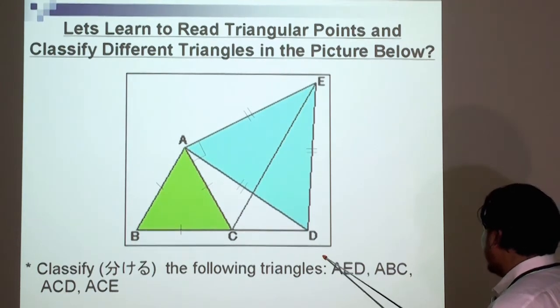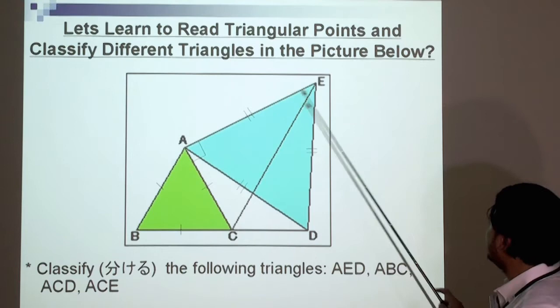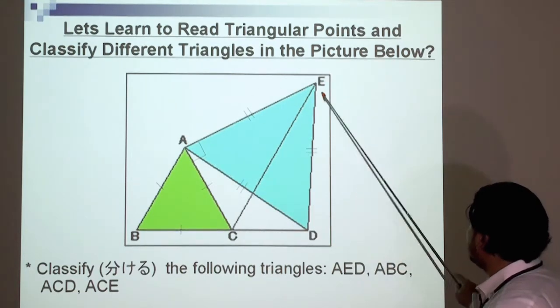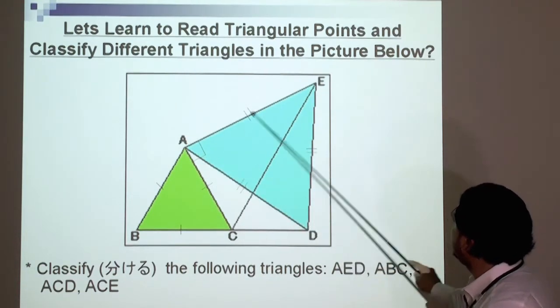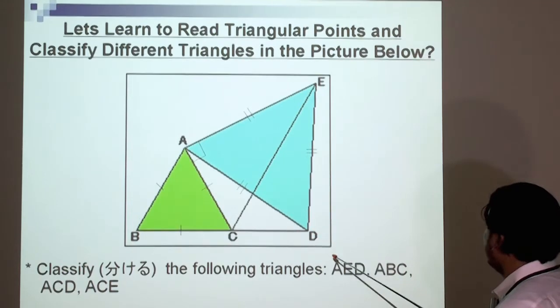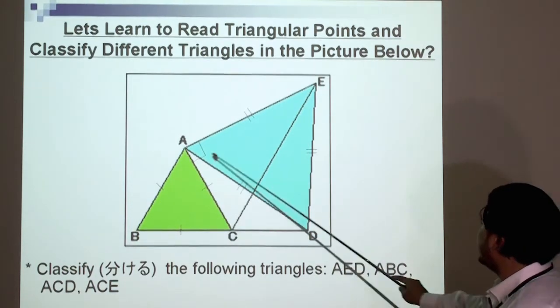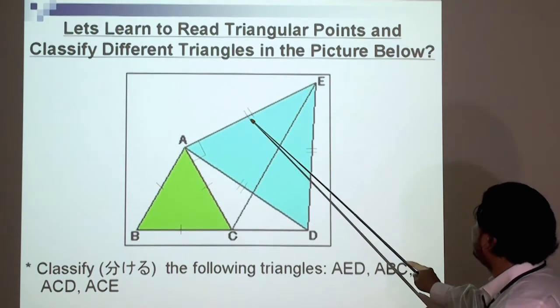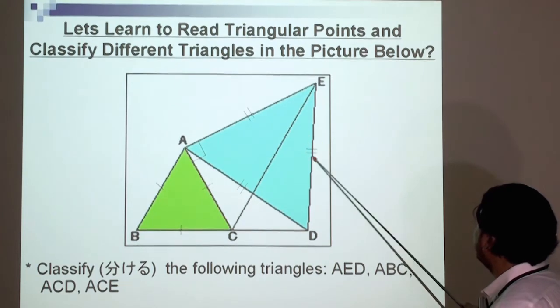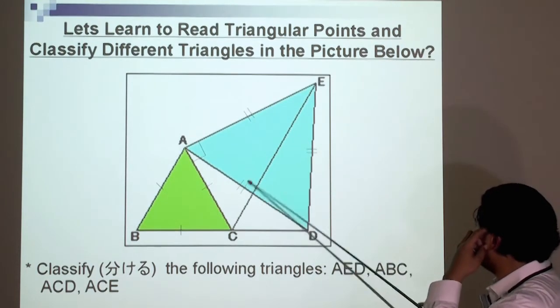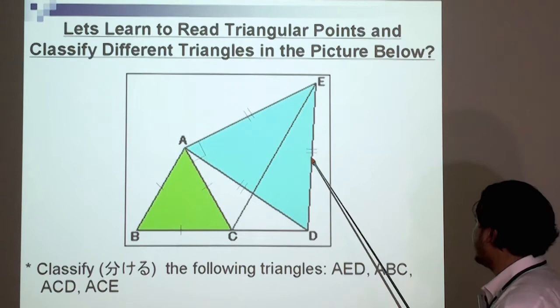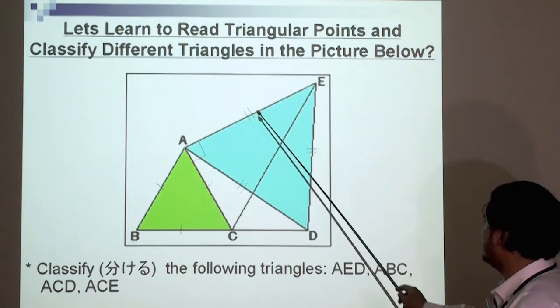Triangle A, E, D. So triangle A, E, D, and that's the triangle here. So what is this triangle? That side is the same as that side. All three sides are the same. So it's an equilateral triangle.